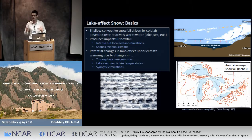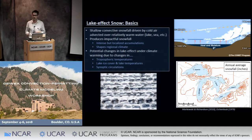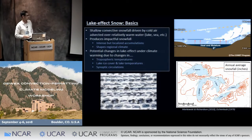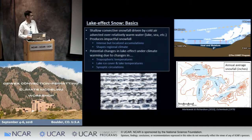It also makes an imprint on the regional climate of the area. Here's the Great Lakes of North America and the average annual snowfall — you see these big bullseyes of snowfall downwind of the lakes where they can receive twice as much as the surrounding areas. So we might ask how this phenomenon might change under climate warming. There are a few reasons: tropospheric temperatures might change affecting low-level temperature gradients, lake heat content and ice cover might change affecting fluxes, and synoptic circulations could change the frequency or intensity of these events.